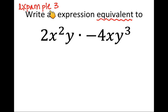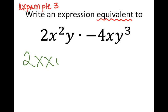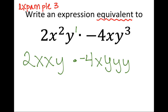Now let's multiply monomials when there's more than one variable. We have 2x squared y times negative 4xy cubed. The process is the same — expand each monomial first: 2 × x × x × y, multiplied by negative 4 × x × y × y × y × y. The exponent of 2 gives two x's, one y from the first term; one x and three y's from the second term.